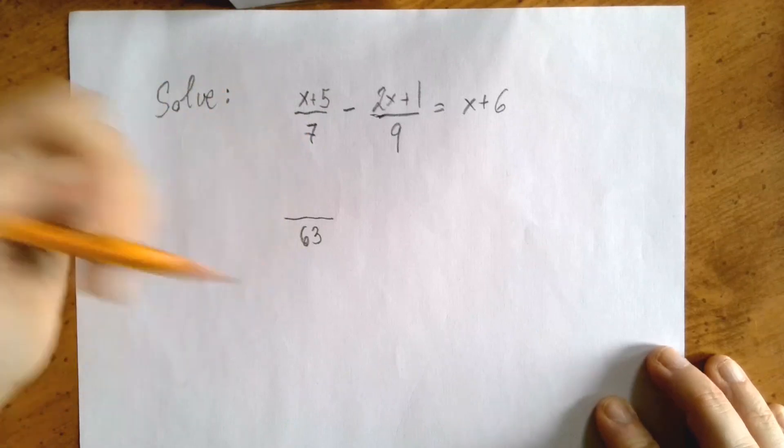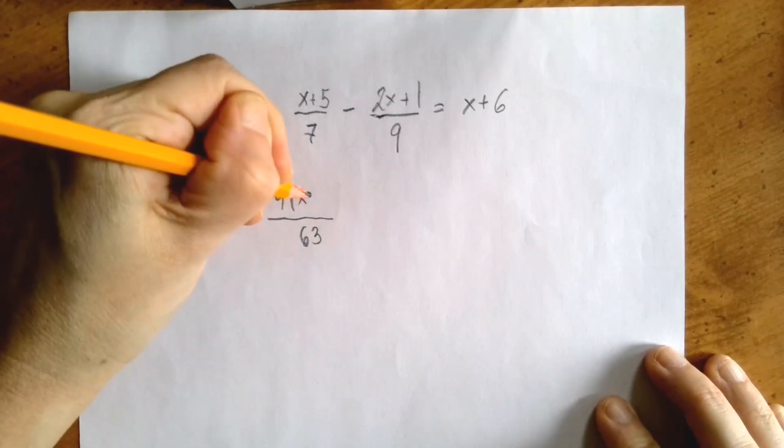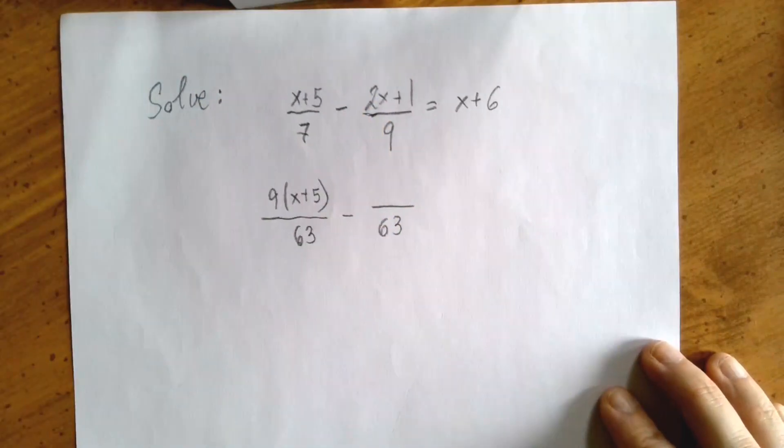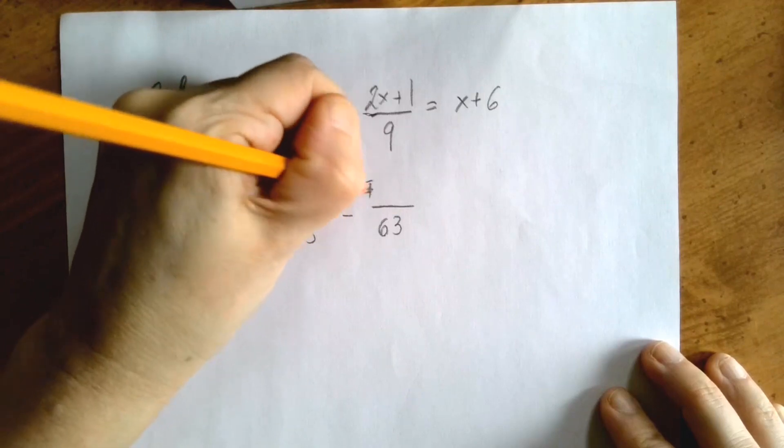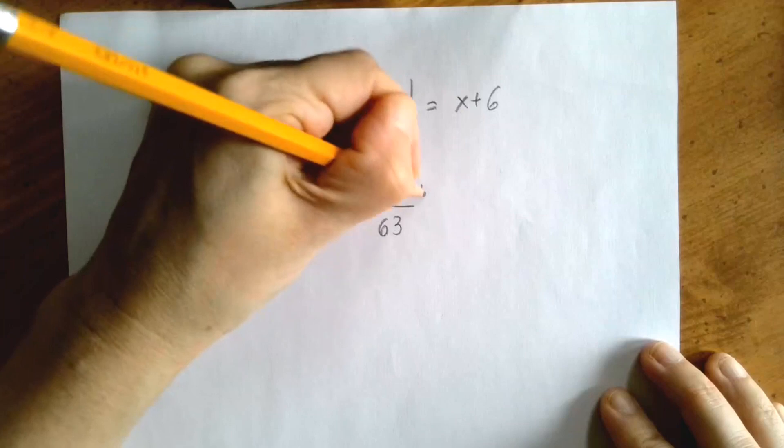So we are going to rewrite all three with a denominator of 63. 7 to 63, that was multiplication by 9, so we have 9 times x plus 5 minus 63. 9 to 63, that's 7, so we have 7 times 2x plus 1.